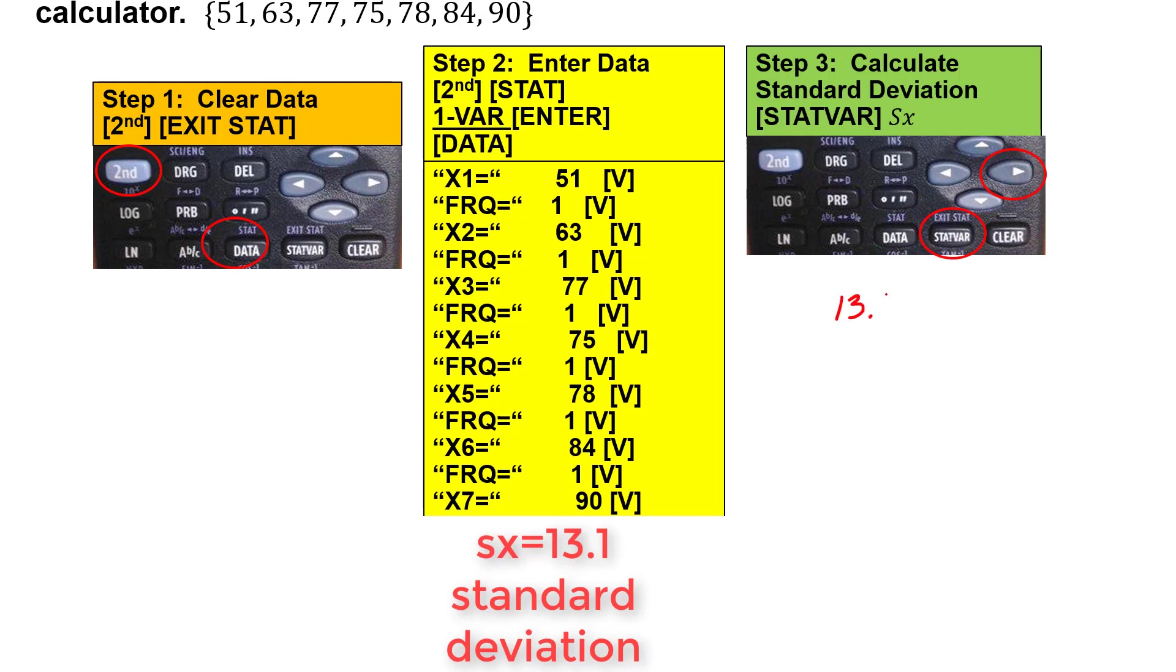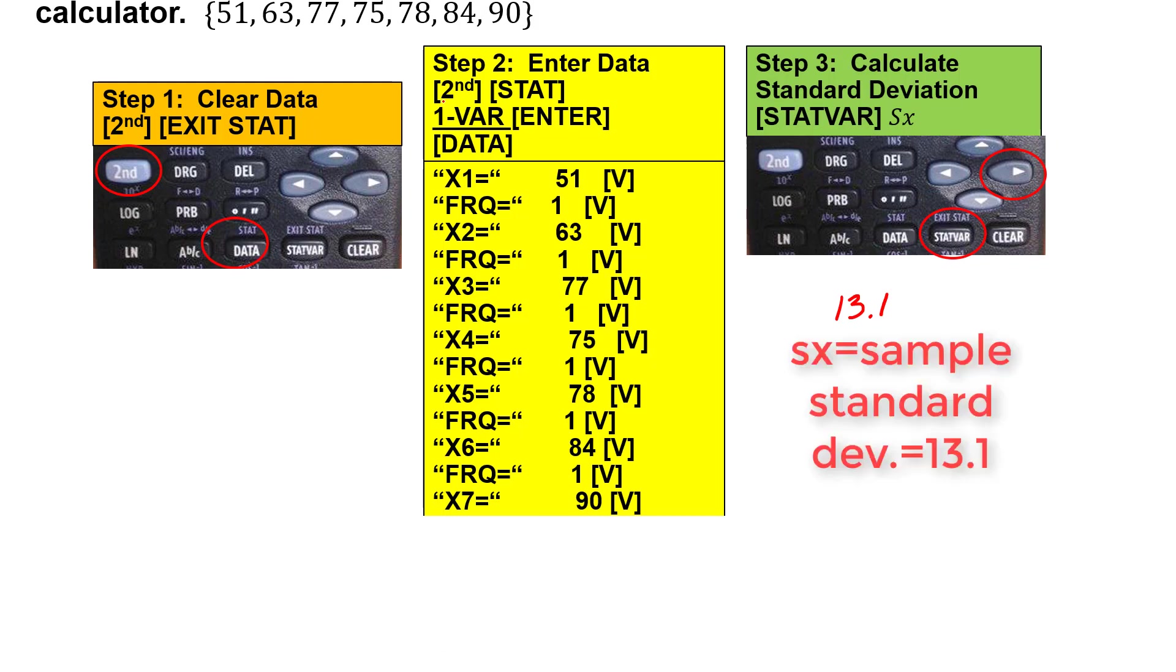Now next to that if you're still on the stat bar screen next to Sx what do you see? Sigma x. Sigma x what do you think that is? Yeah if it had been population data and not sample data we would have to use sigma x so arrow over to that just to see for comparison. Is it different from 13.1? Yes it's smaller it always will be.